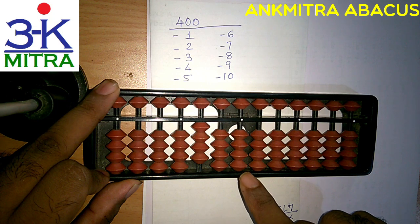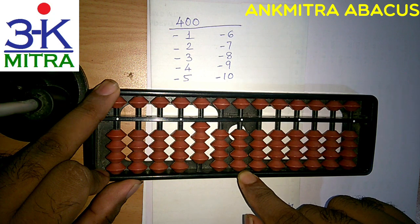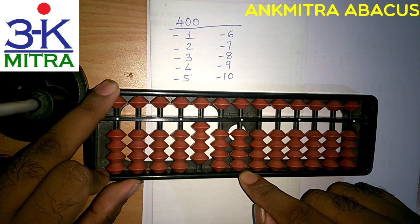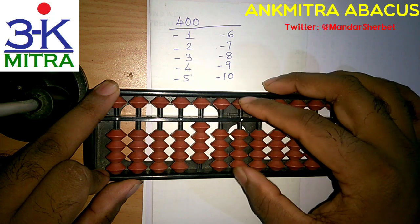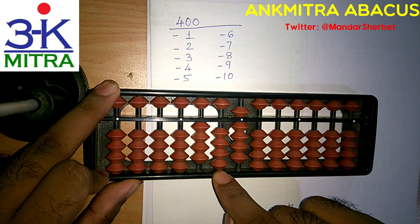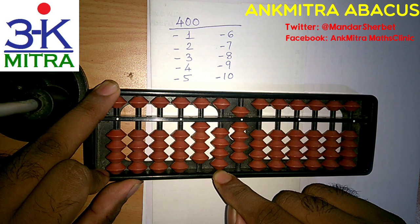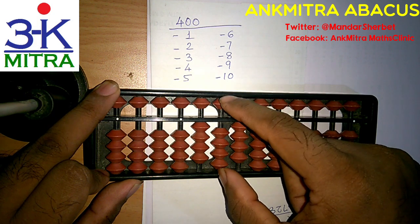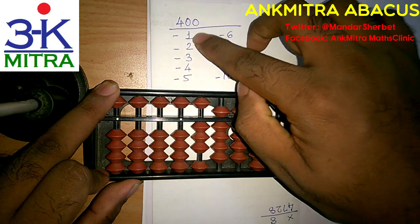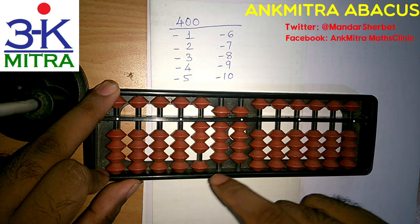Now we need to subtract 1 on the units place. For subtracting 1 on the units place I don't have anything here, so I will have to use the big friend formula of minus 1 which is plus 9 minus 10. I will do plus 9 here and then minus 10, that is minus 1 on this 10s place rod. But here again I don't have anything, so again I will have to use the big friend formula of minus 1 which is plus 9 and minus 10 on the next left rod. So the first number, minus 1, is done finally by using the plus 9 minus 10 formula twice.